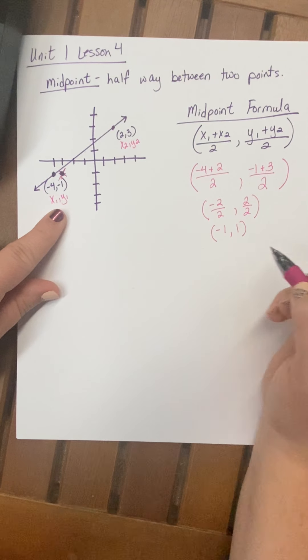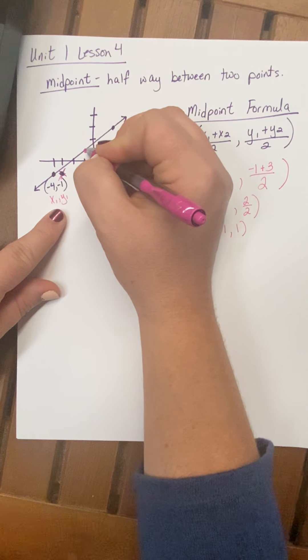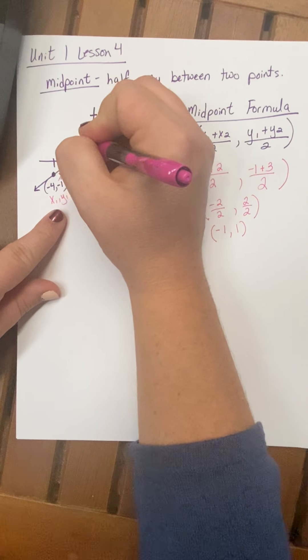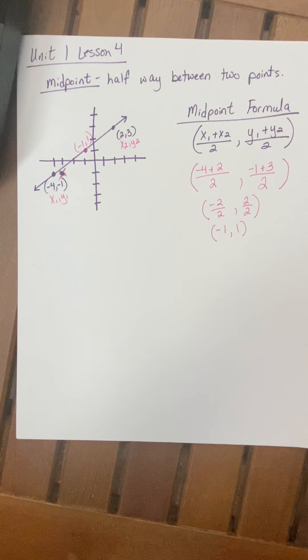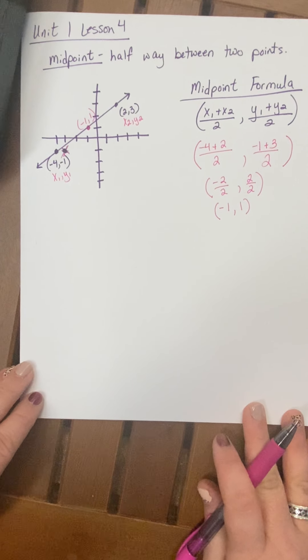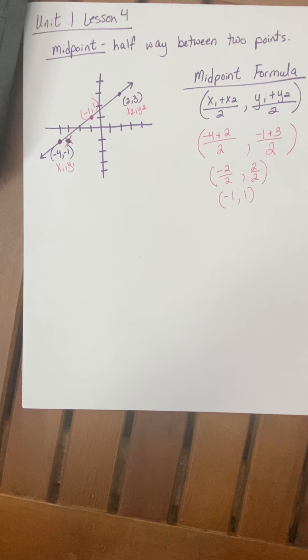So I can go back over here and I can plot negative 1, 1, right there, and that is my midpoint. That is the point in the middle. Okay, that's how you do it. One of the things about geometry is a lot of things will be given to you in formula style. As long as you know how to plug into a formula and simplify, you're fine.